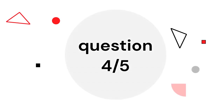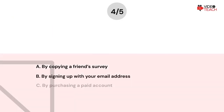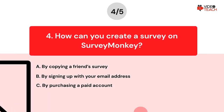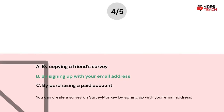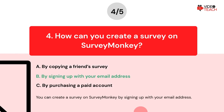Question number four. How can you create a survey on SurveyMonkey? Option A: By copying a friend's survey. Option B: By signing up with your email address. Option C: By purchasing a paid account. Now you have about 15 seconds to think about your answer. The correct answer is Option B. You can create a survey on SurveyMonkey by signing up with your email address.